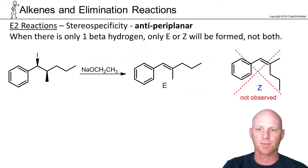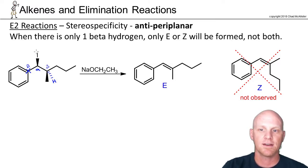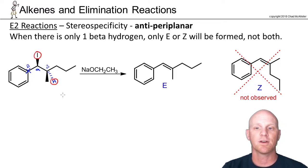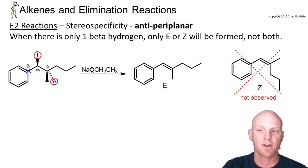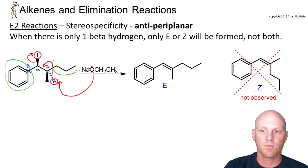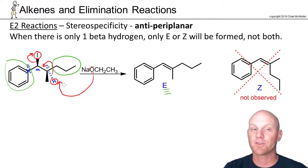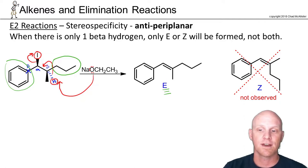Let's look at another example — similar to the last one, but with a key difference. There's our alpha carbon. The beta carbon on the left has no hydrogens, so no elimination on that side. The beta carbon on the right has only one hydrogen, and it's on the dashed position. The iodine and that hydrogen are already antiperiplanar — the E2 reaction can happen right now without any rotation. Methoxide deprotonates that hydrogen, freeing electrons for pi bond formation and kicking off the leaving group. The benzene ring and the propyl group are trans in the product, giving us the E isomer. With only one beta hydrogen, there's no rotation that gives another option. We only get the E product — not the Z — at all.